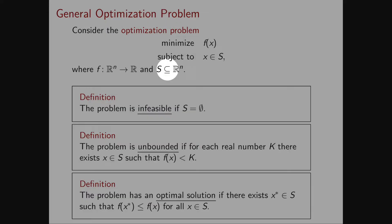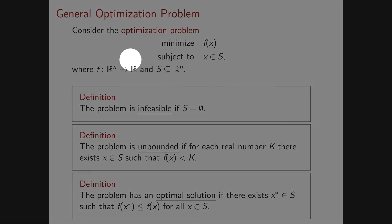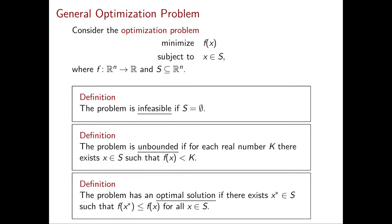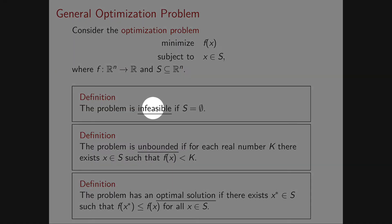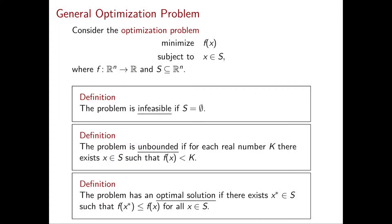Here S is a subset of Rⁿ and therefore f is a function from Rⁿ to R. I'm going to give you three definitions which we have already seen in the previous chapter for linear programming, but here in a more general form. The first is infeasibility: we say the problem is infeasible if the feasible region is the empty set.